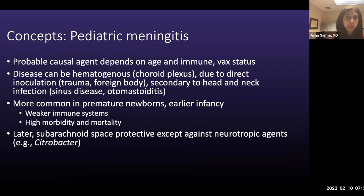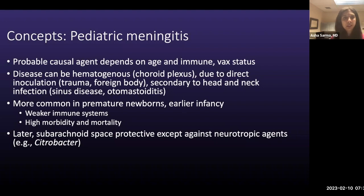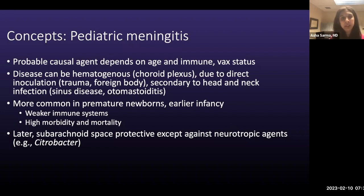In pediatric meningitis, the probable causal agent depends on age and immune status. Different pathogens affect patients based on immune and vaccination status. Disease can spread hematogenously via the choroid plexus — a highly vascular structure — or through direct inoculation from trauma, foreign body, or secondary to head and neck infection. This is more common in older patients who've pneumatized their sinuses and mastoids. Meningitis is more common in premature newborns and early infancy due to weaker immune systems with high morbidity and mortality. Later, the subarachnoid space becomes protective except against neurotropic agents such as Citrobacter and Enterobacter.